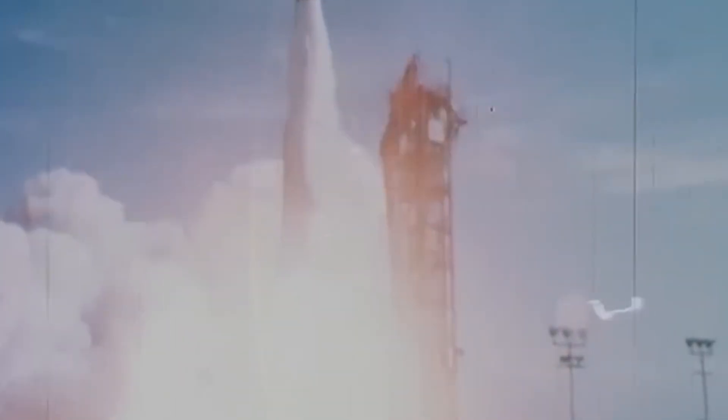In 1965, during the Gemini 7 mission, astronauts Frank Borman and James Lovell reported seeing unidentified lights moving in formation in space.